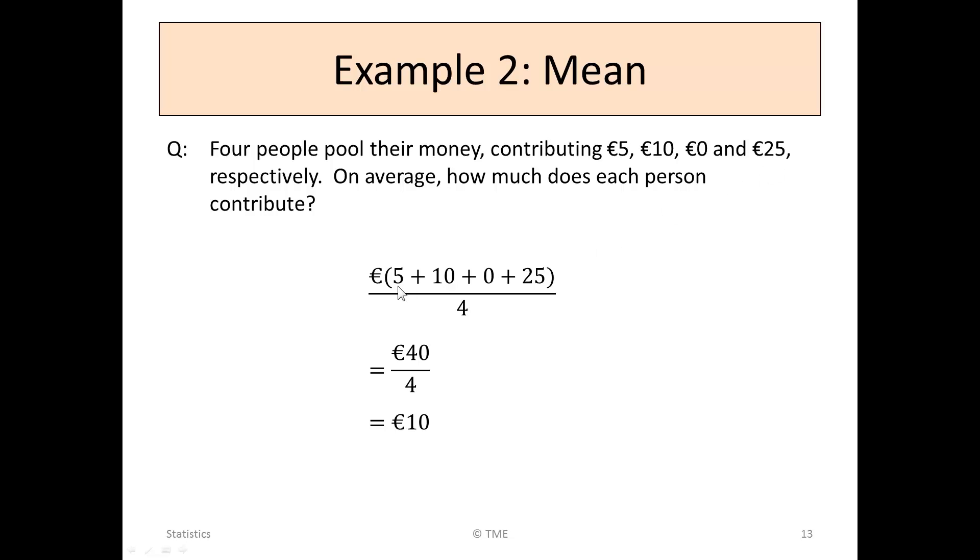So we add the four numbers again, €5, €10, nothing and €25 and divide by 4. 5 and 10 and 0 and 25 gives 40. 40 divided by 4. On average, we have €10.